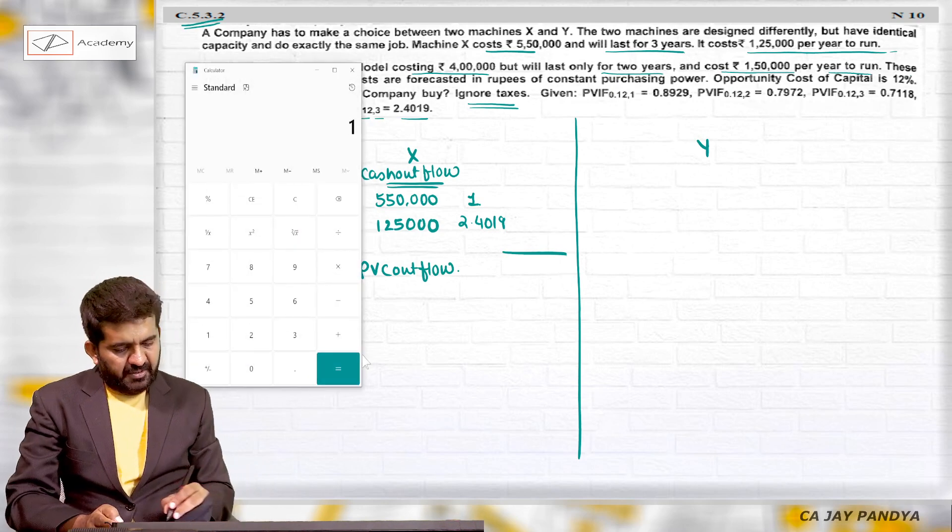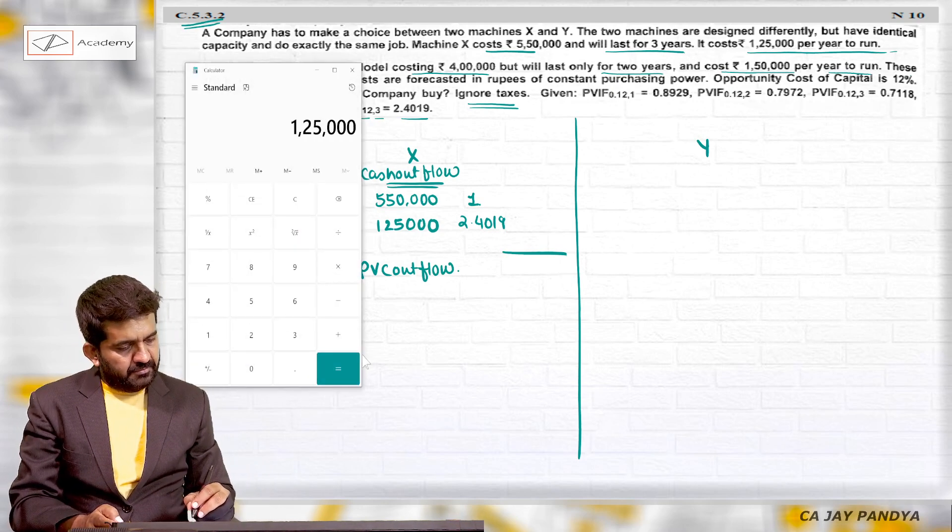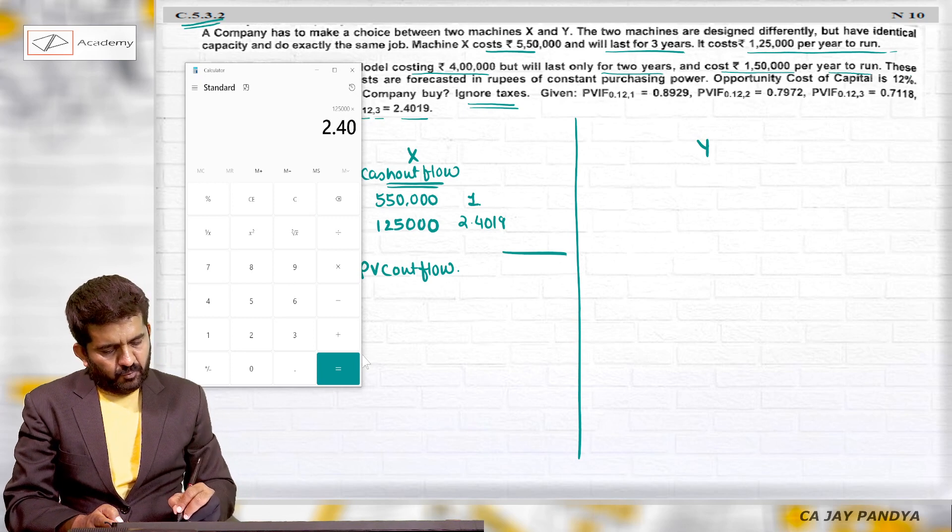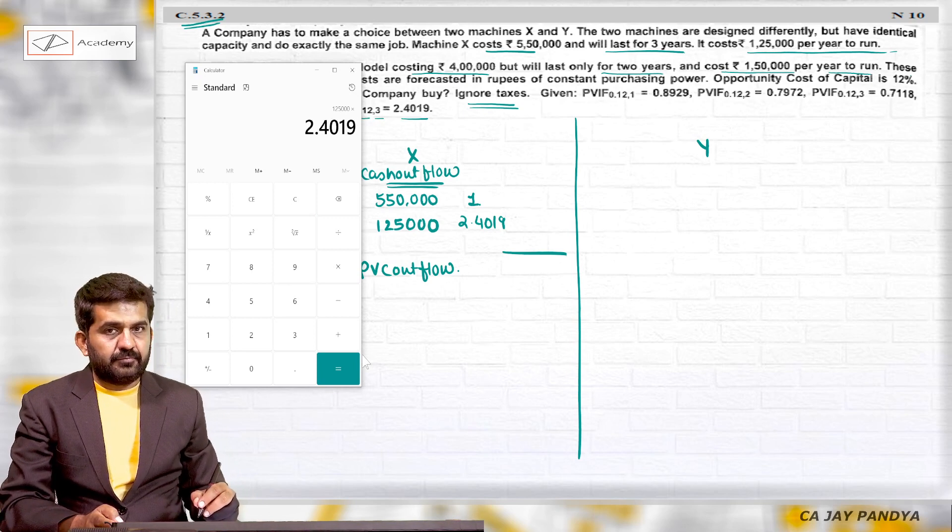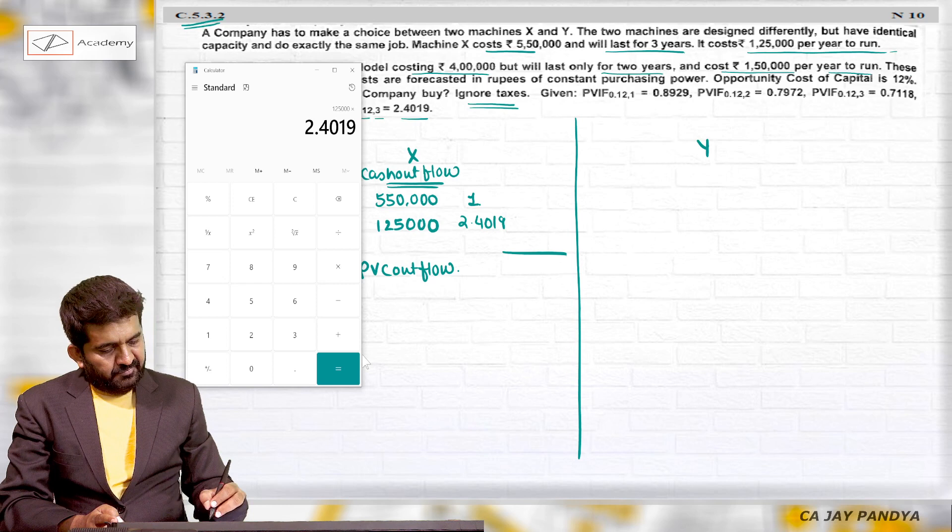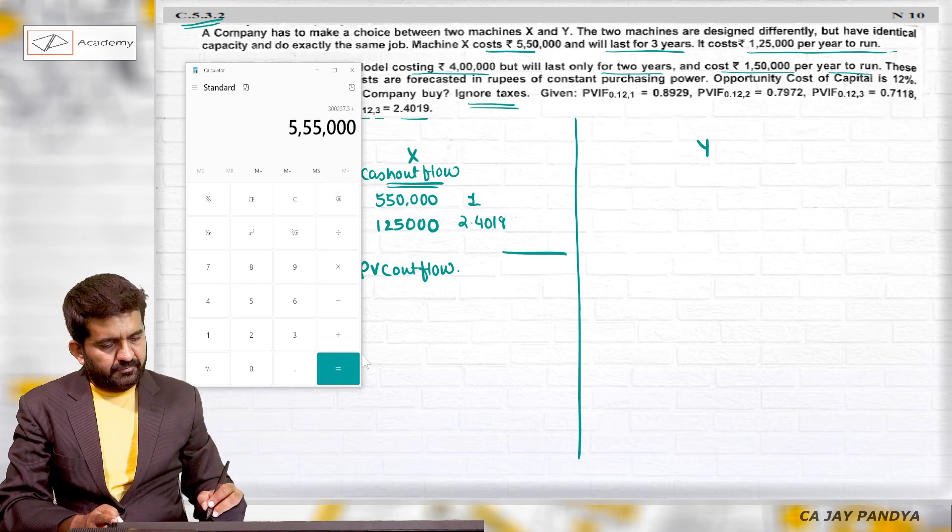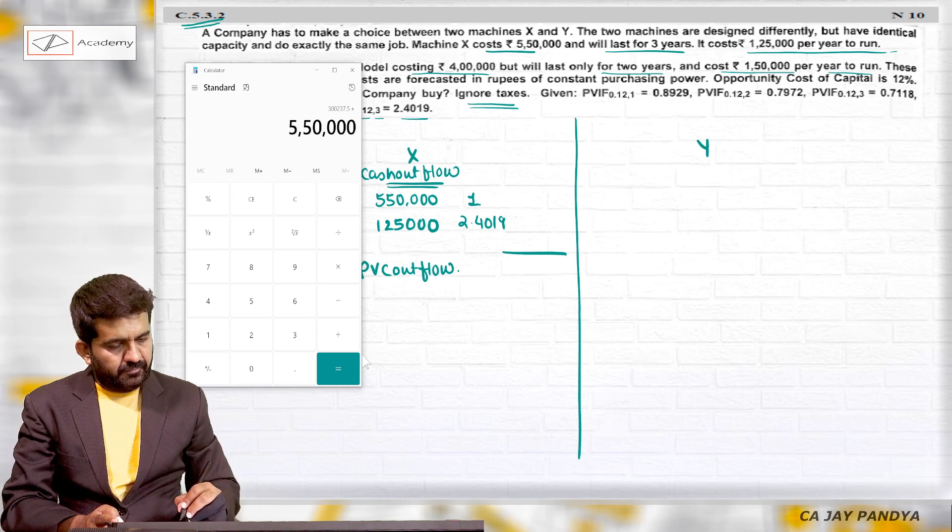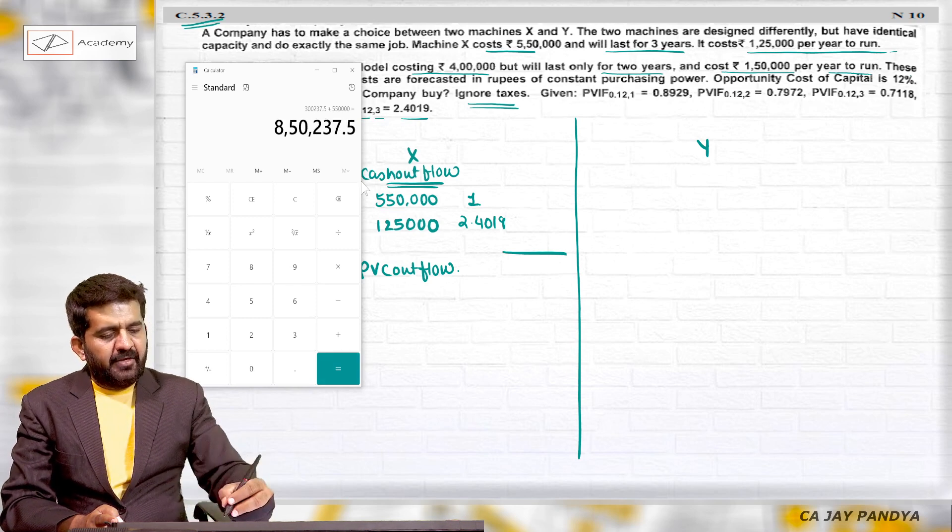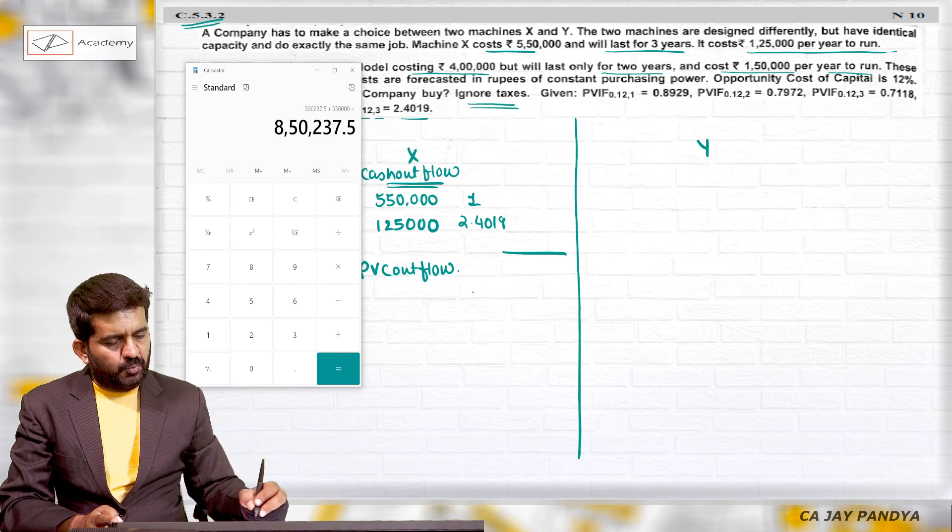Which will be 1 lakh 25,000 multiplied by 2.4019 plus 5 lakh 50,000, which equals 8 lakh 50,237.